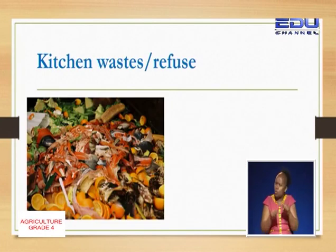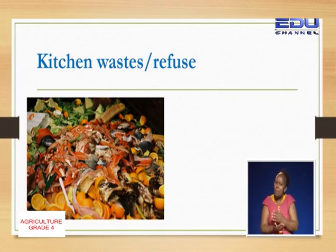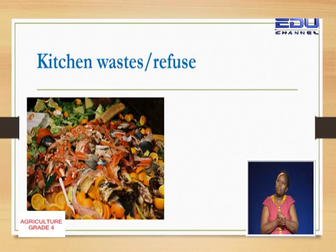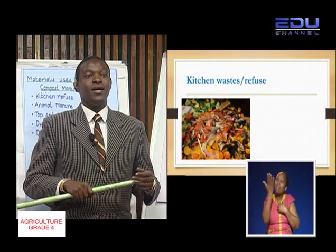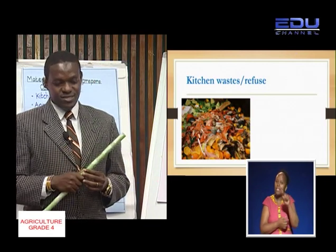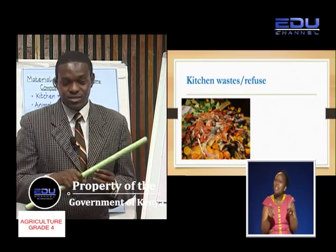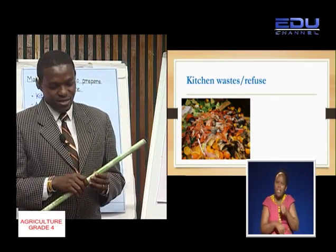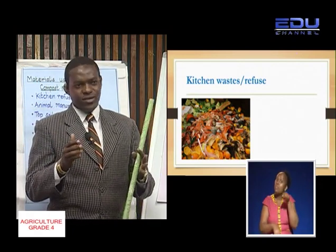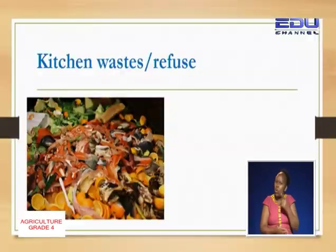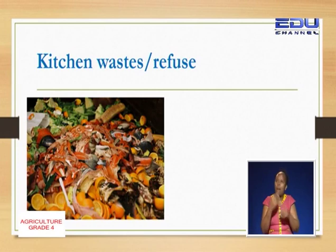Are you able to pick some of the peels we've mentioned? Look at the picture. What can you see? We can see some orange peels — orange peels are fruit peels and that's also kitchen waste. There is also the carrots — peels from the carrots are also part of kitchen waste. We have some vegetable cuttings, and those are also part of the kitchen waste. Well done, learner.